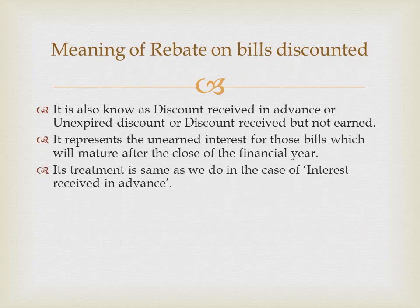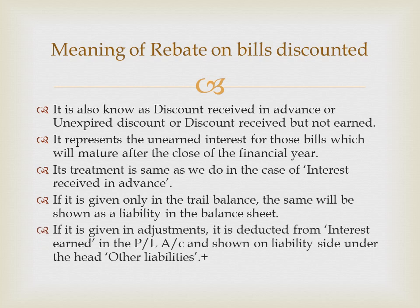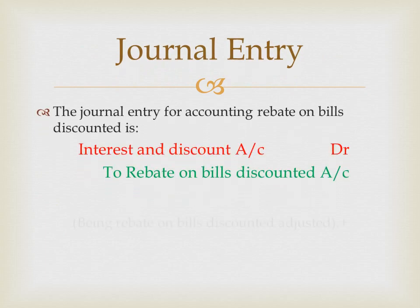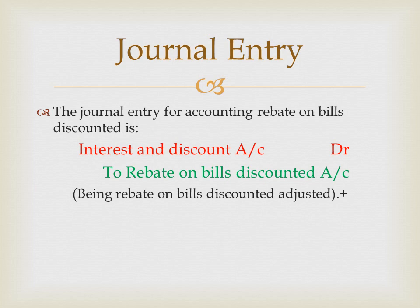Meaning of rebate on bills discounted: It is also known as discount received in advance, or unexpired discount, or discount received but not earned. It represents the unearned interest for those bills which will mature after the close of the financial year. Its treatment in the final accounts of banking companies is the same as we do in the case of interest received in advance. If it is given only in the trial balance, the same will be shown as a liability in the balance sheet. If it is given in adjustment, it is deducted from interest earned in the profit and loss account and shown on the liability side under the head other liabilities. The general entry for accounting rebate on bills discounted is: Interest and Discount Account debit, to Rebate on Bills Discounted Account — being rebate on bills discounted.